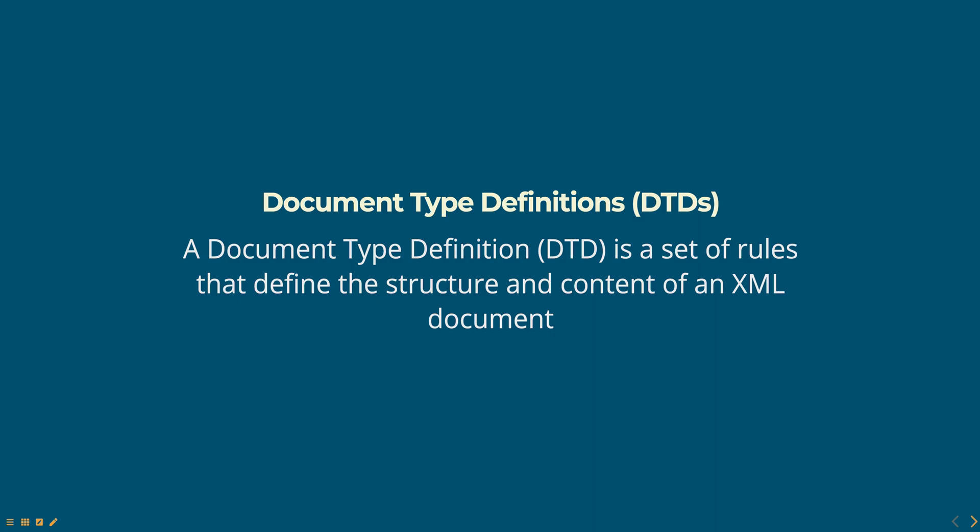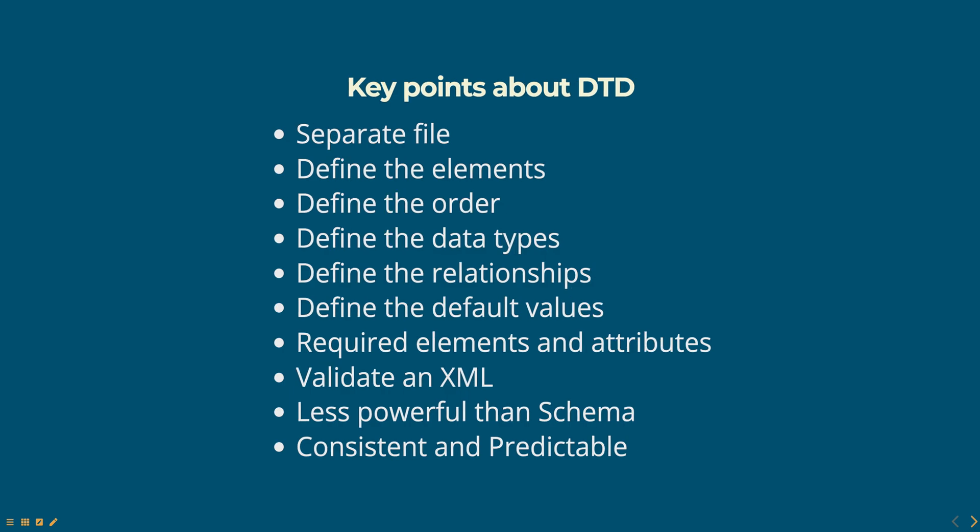Here are a few key points about DTDs. DTDs are defined in a separate file with a .dtd file extension. DTDs can be used to define the elements that can be used in an XML document, as well as the attributes and entities that can be used with those elements.